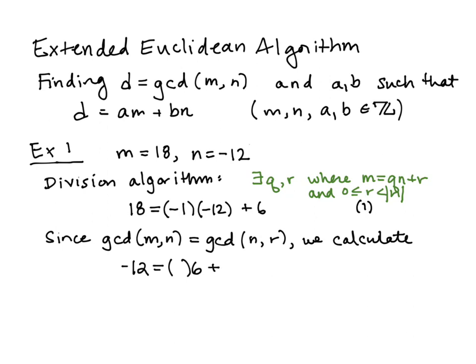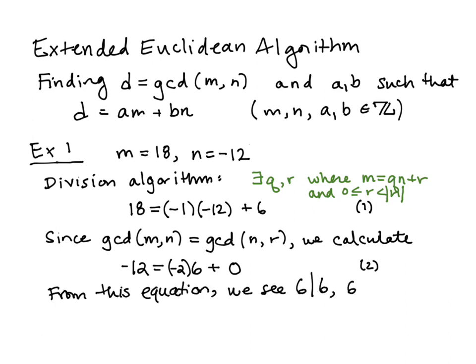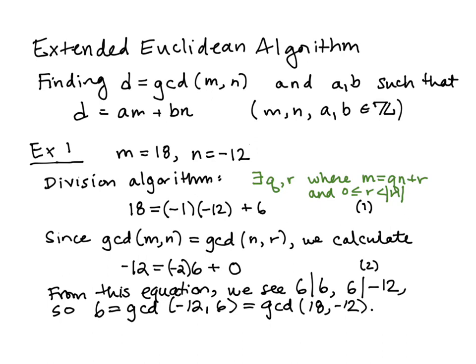It's not too hard to figure out what the new q and r are going to be. The new q is negative two and the new r is zero. So six divides six and six divides negative twelve. That means six is a common divisor of negative twelve and six, and in fact the greatest common divisor, because anything that divides it will have to divide six as well. So using our previous fact we get that it's the GCD of eighteen and negative twelve.